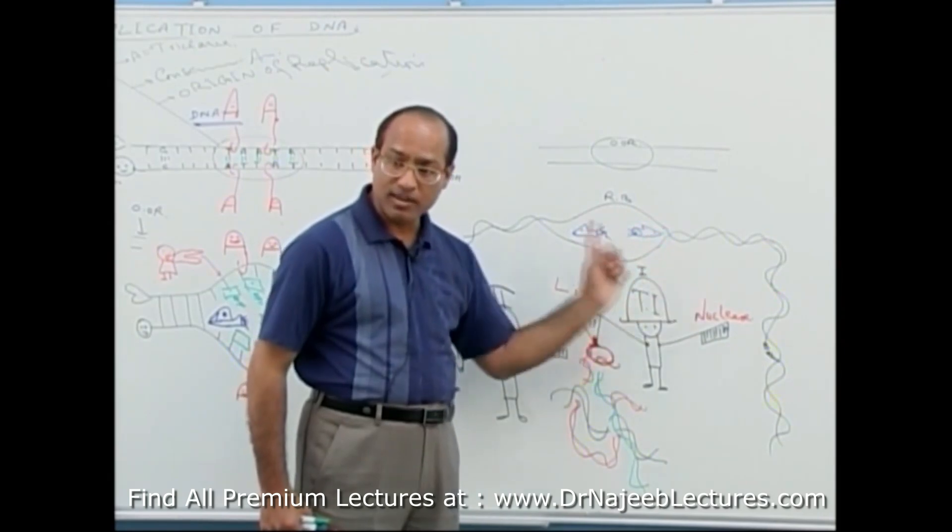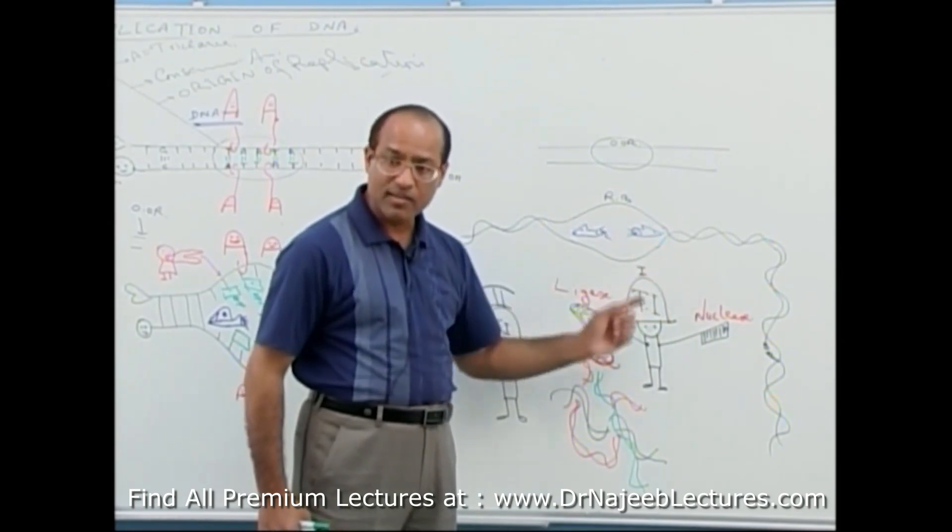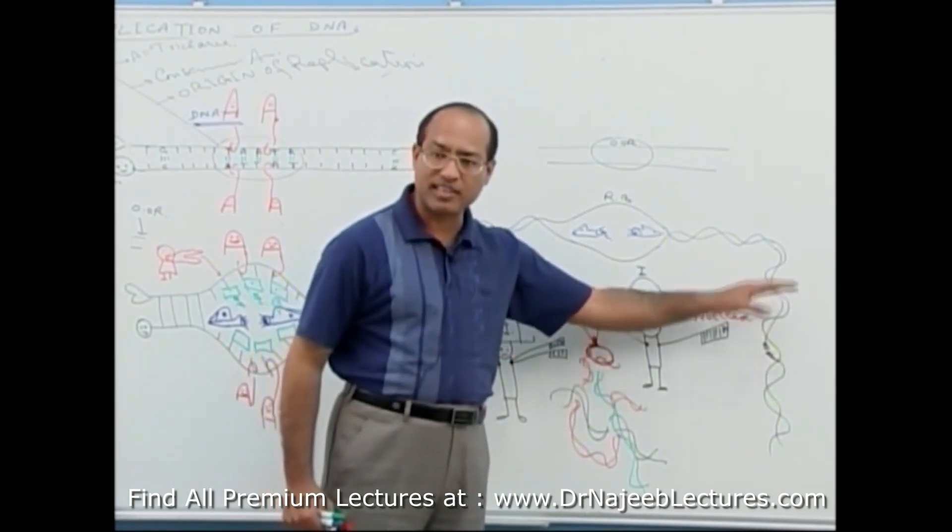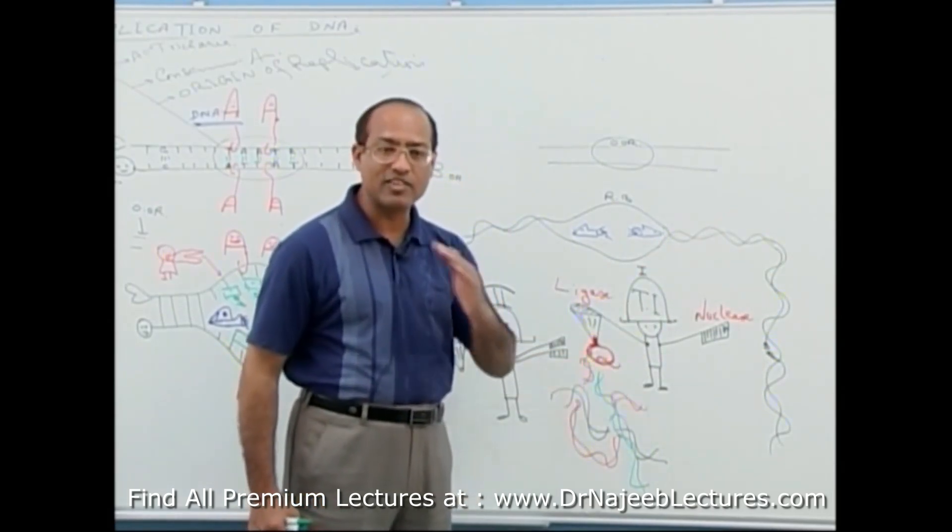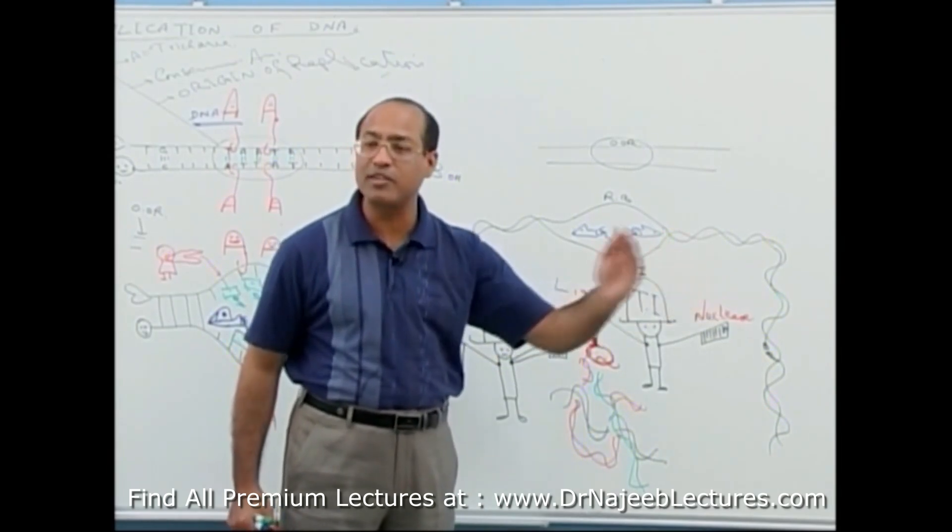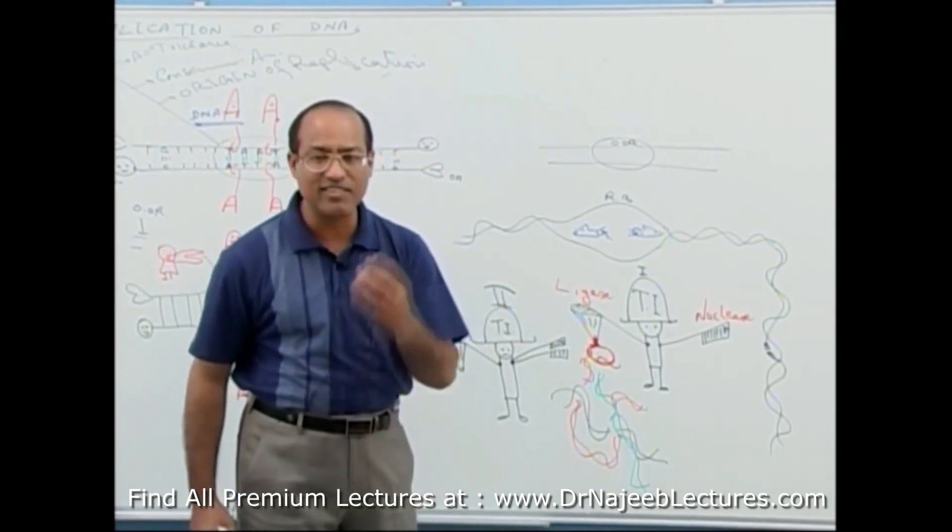That cancer cells will keep on trying to replicate their DNA. Their topoisomerases will keep on cutting the DNA, but can they reseal the DNA? No. And cancer cell DNA will be fragmented into millions of small pieces and cancer cell will die.